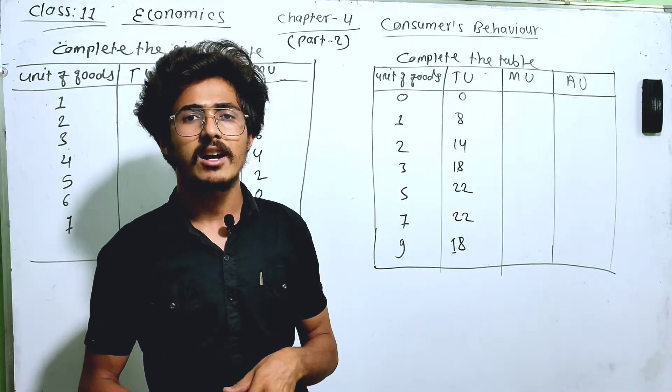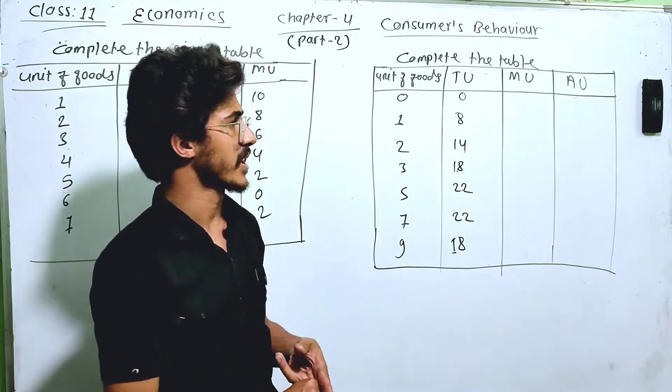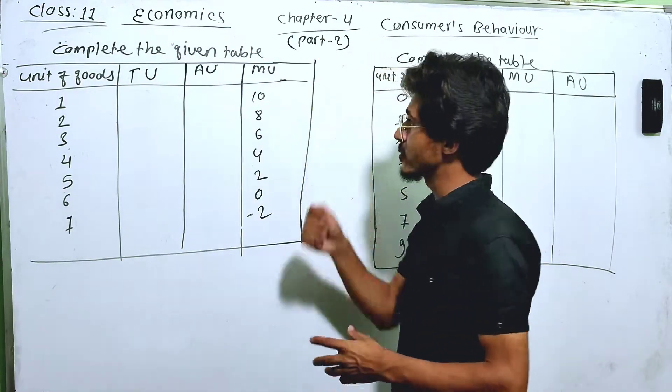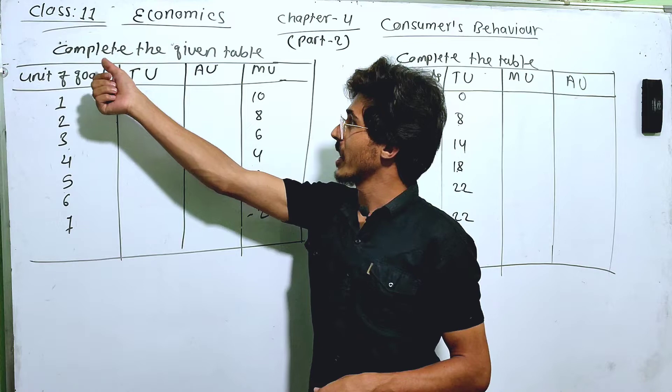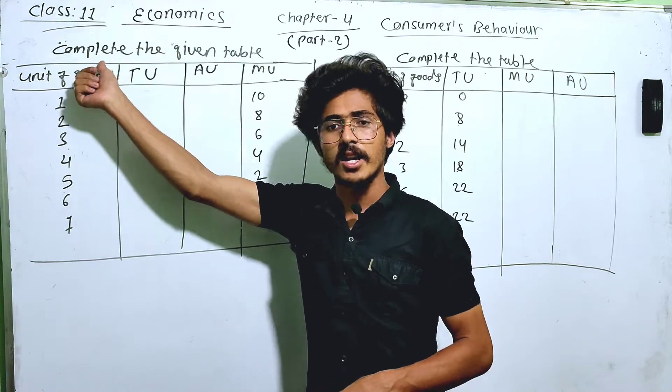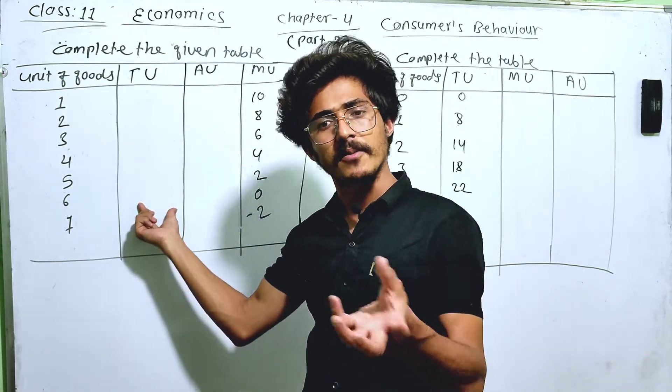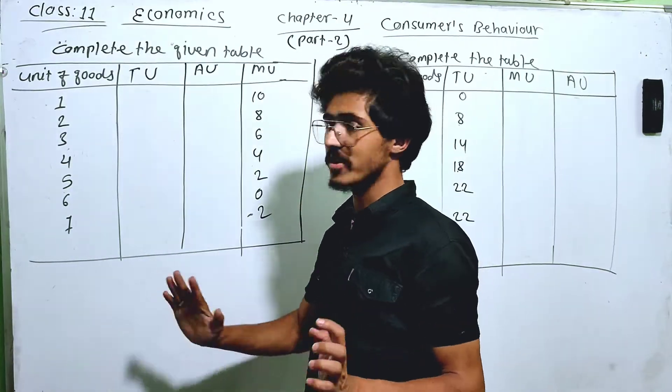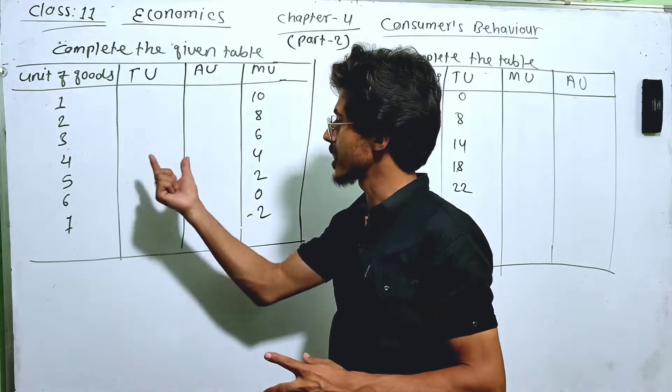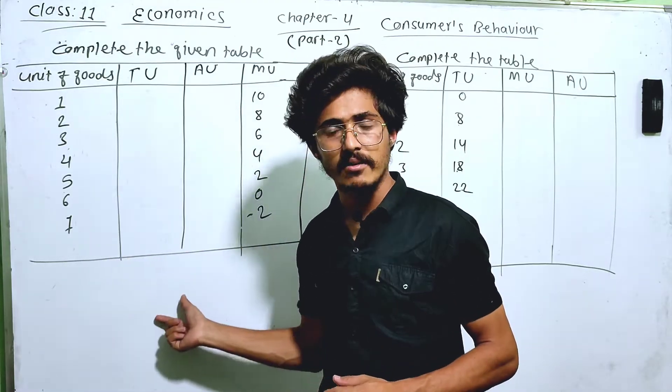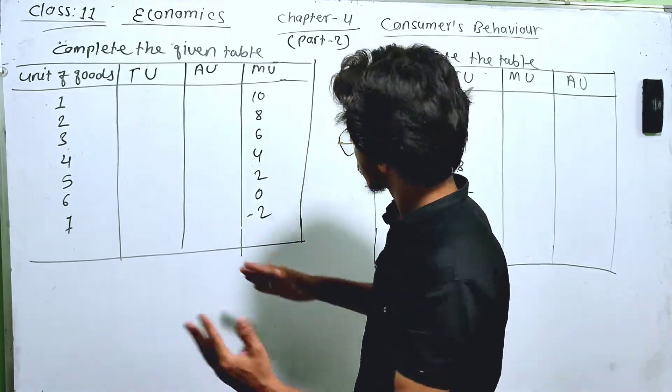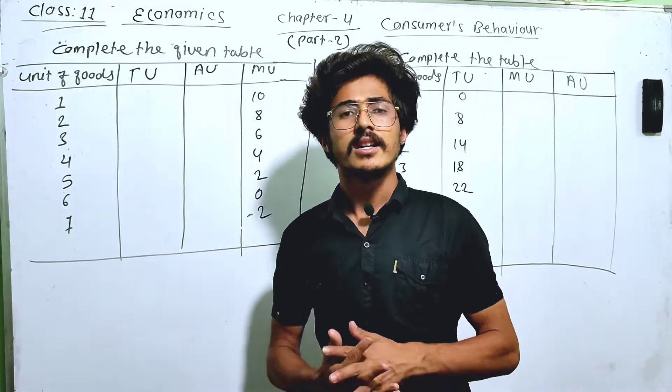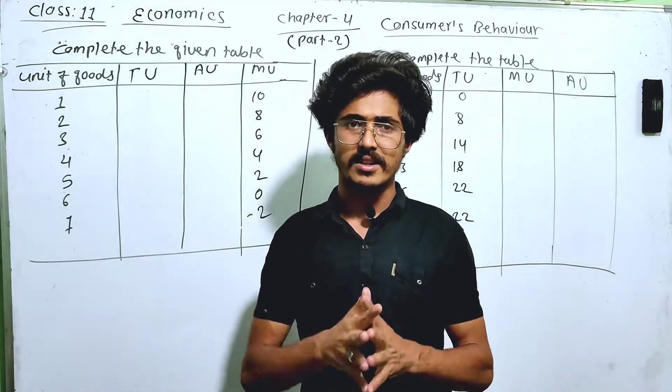This is the level of learning. You will learn numerical problems in the class 11 economics books. You will create a table and figure. You will learn three questions: the table, figure and relation, and finding the total utility and marginal utility. That is the three points for the figure.